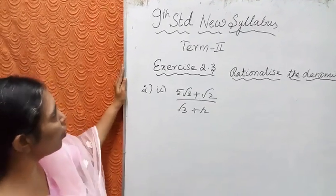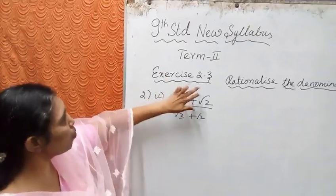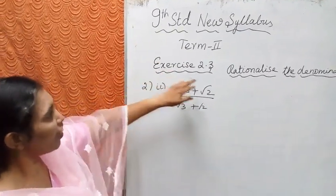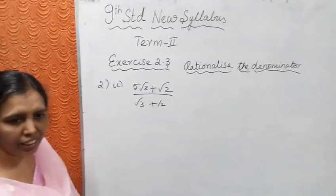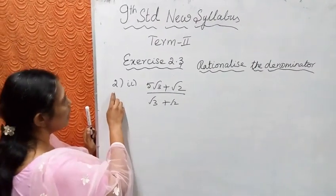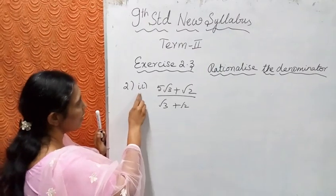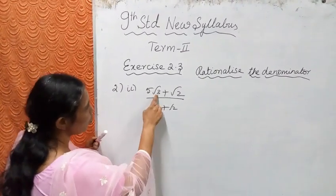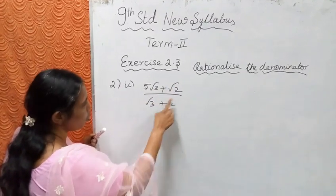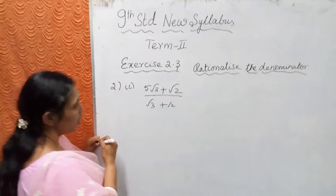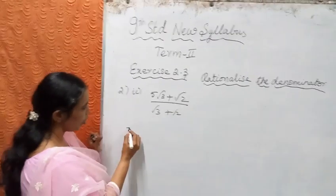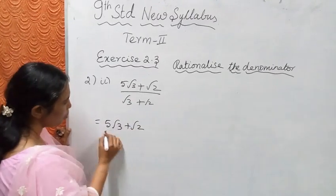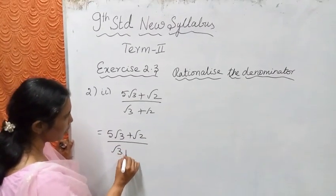Hello students. Now we are going to see exercise 2.3 for 9th standard new syllabus term 2. Rationalize the denominator. The second sum is: 5√3 plus 2√2 divided by √3 plus √2. How are we going to do this sum? 5√3 plus 2√2 divided by √3 plus √2.